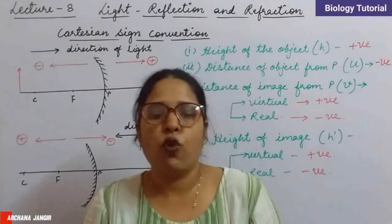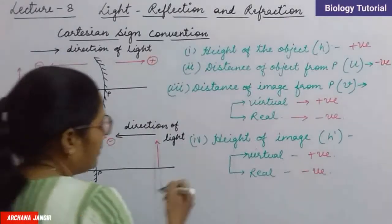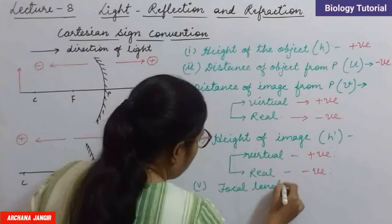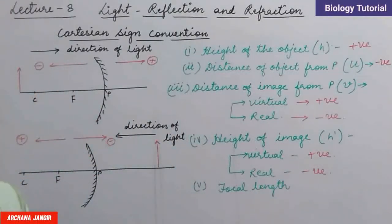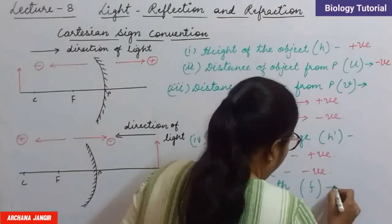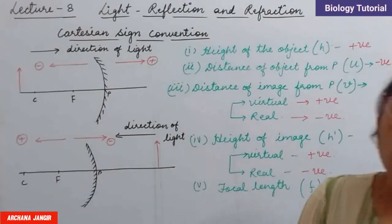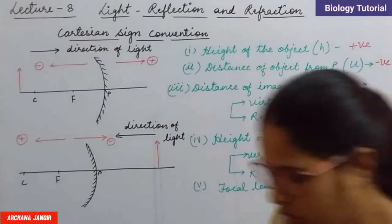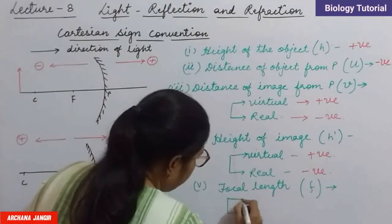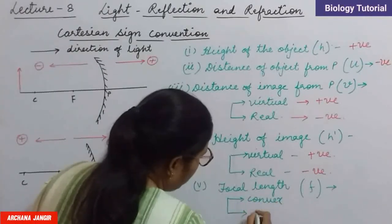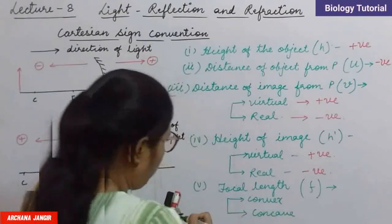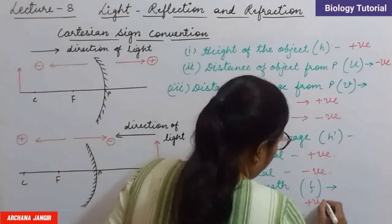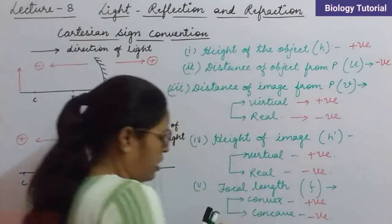Next one is focal length — distance between P and F, denoted by small f. Capital F denotes the principal focus, and focal length is denoted by small f. Focal length is positive for convex mirror and negative for concave mirror. Its value is positive for convex mirror and negative for concave mirror.